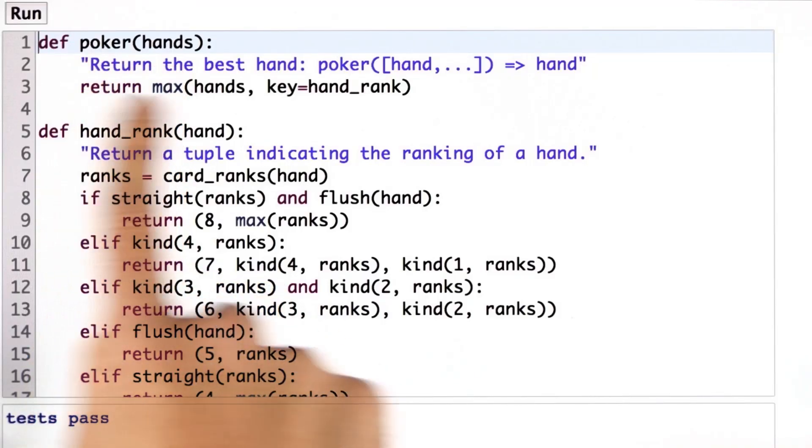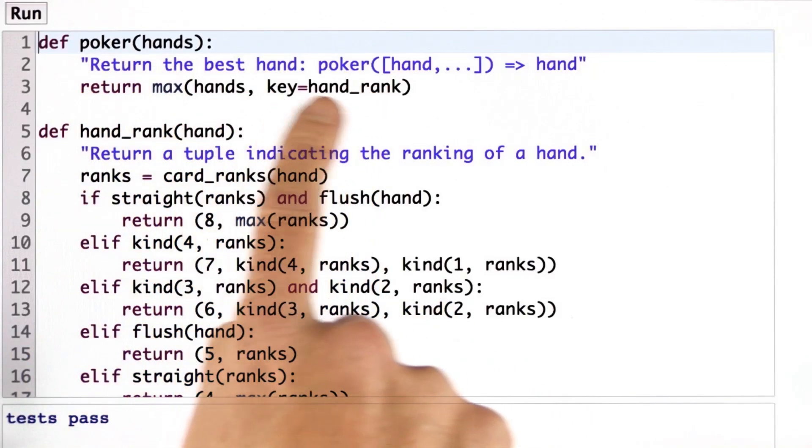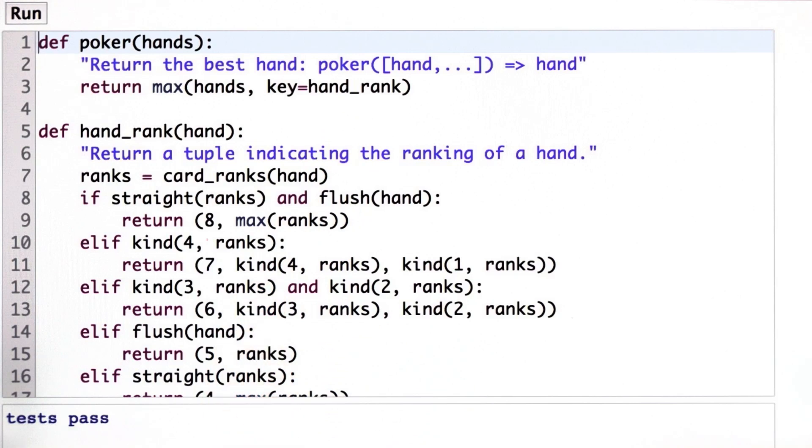So here's the function poker. What am I going to do to change this to handle ties? It seems like it might be complicated. We didn't talk about ties here at all. The max function doesn't do anything about ties. How are we going to handle that?